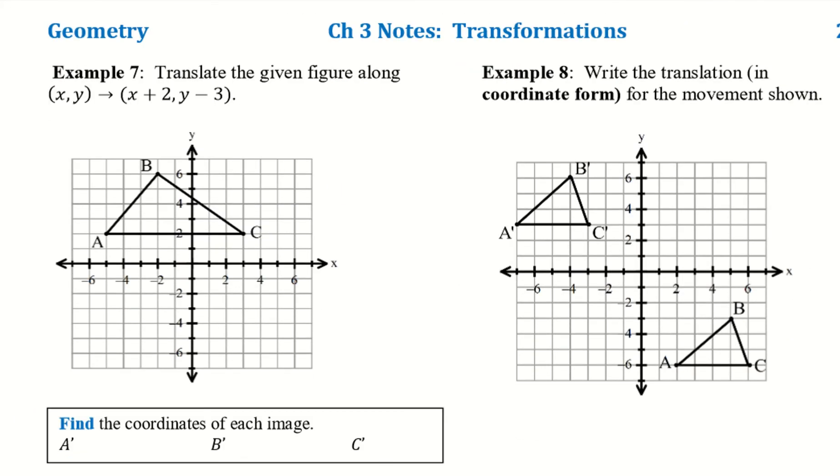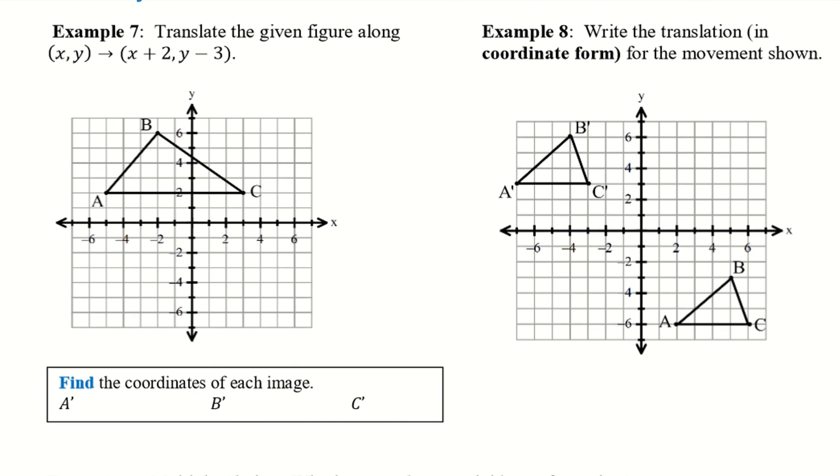Okay, so let's go ahead and try a couple graphing examples. So example 7, we want to translate the figure from X, Y to X plus 2, Y minus 3. So that means we're going to go right 2 and down 3. So I'm going to do this with every single point. So right 2 and down 3. So there's my new A.